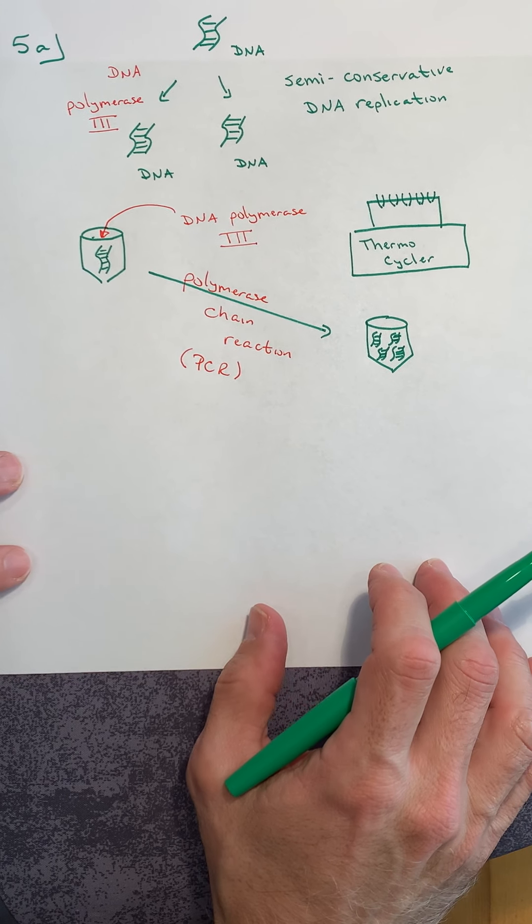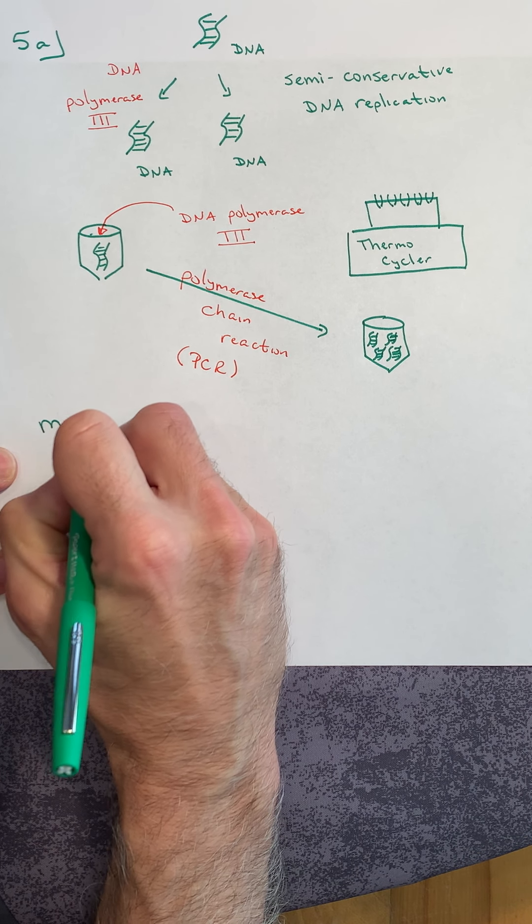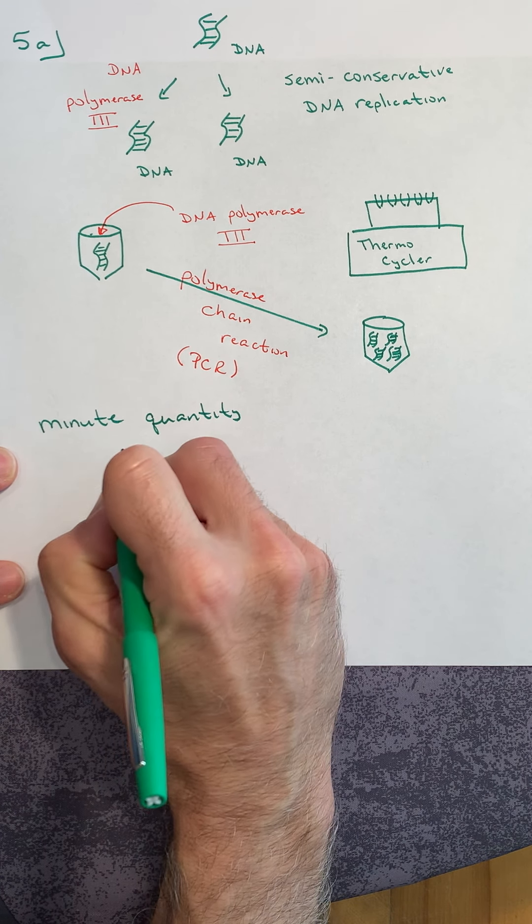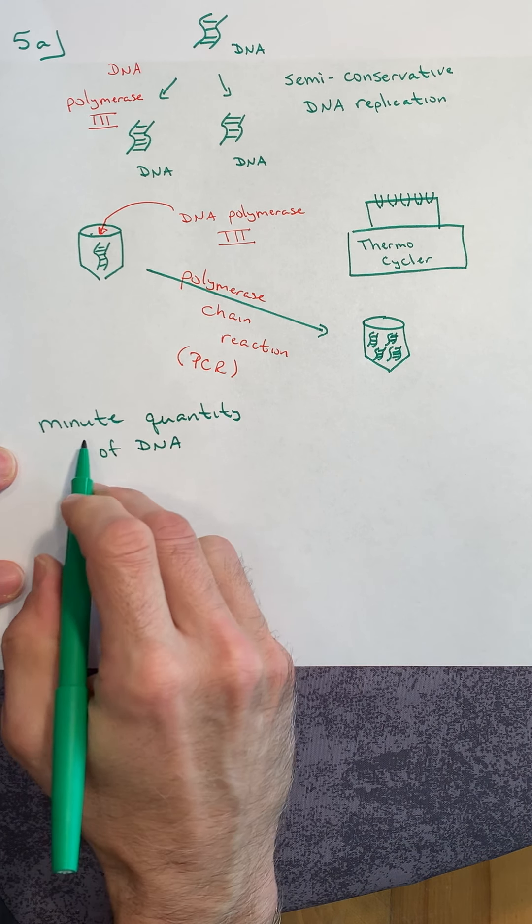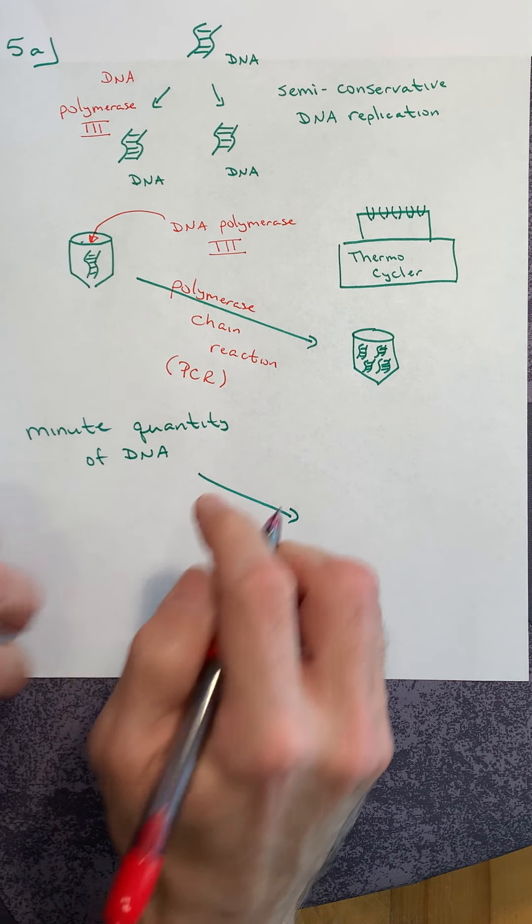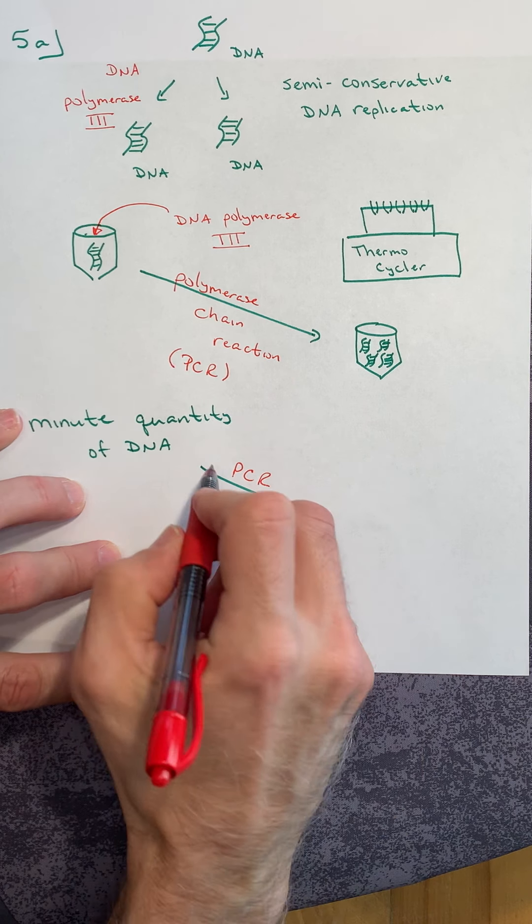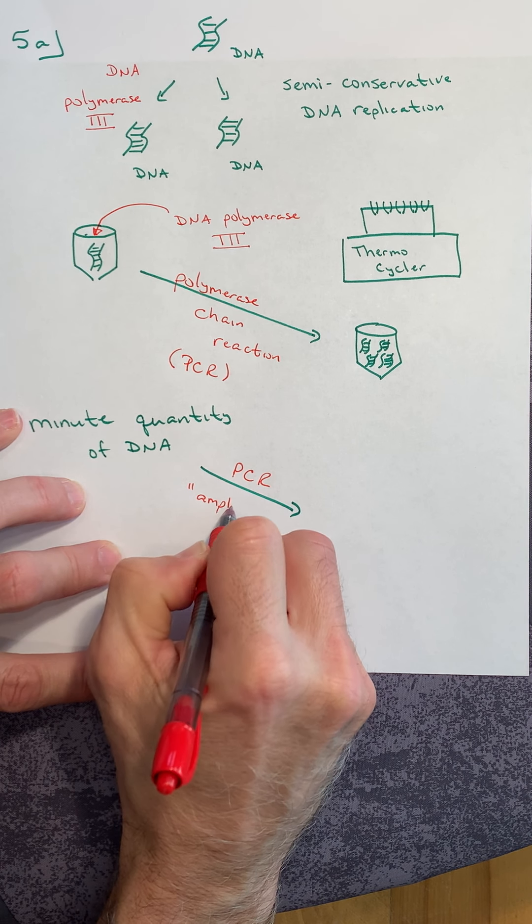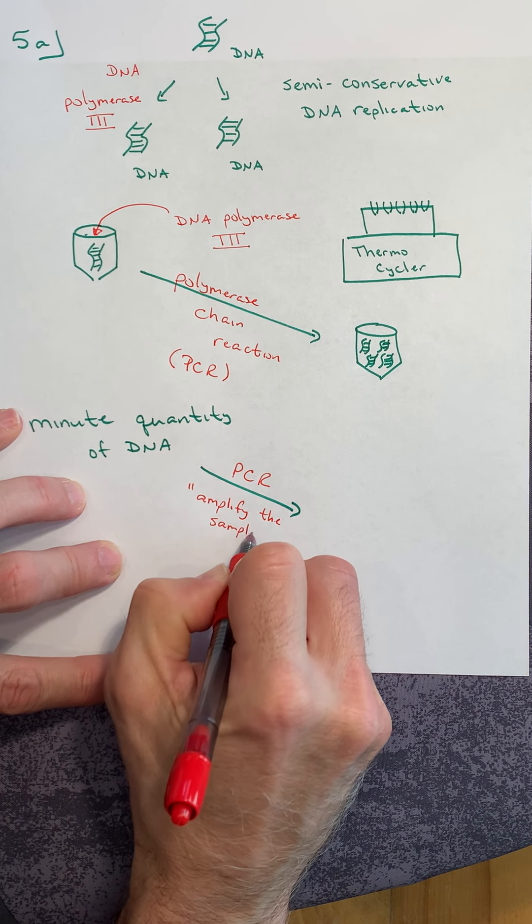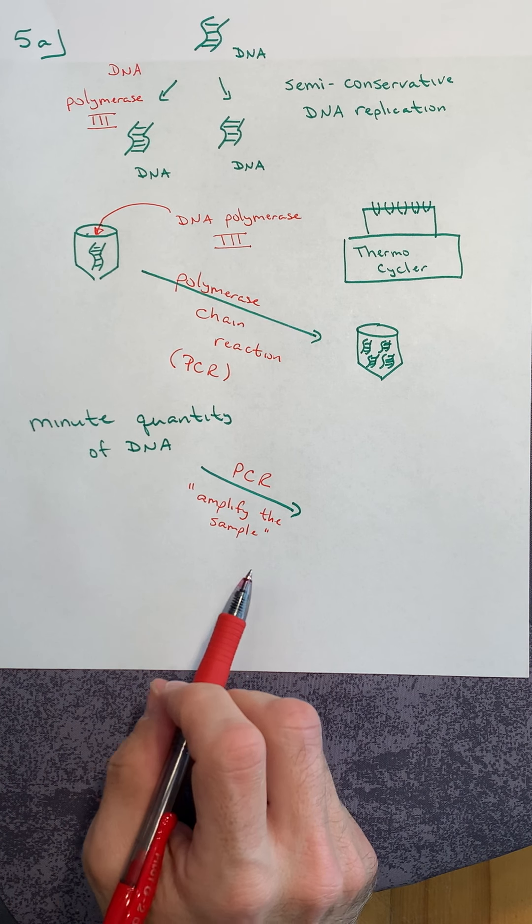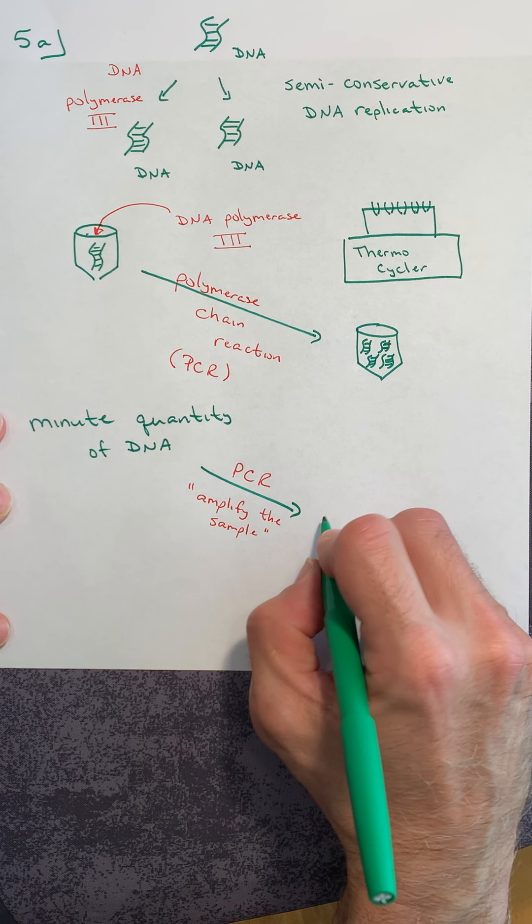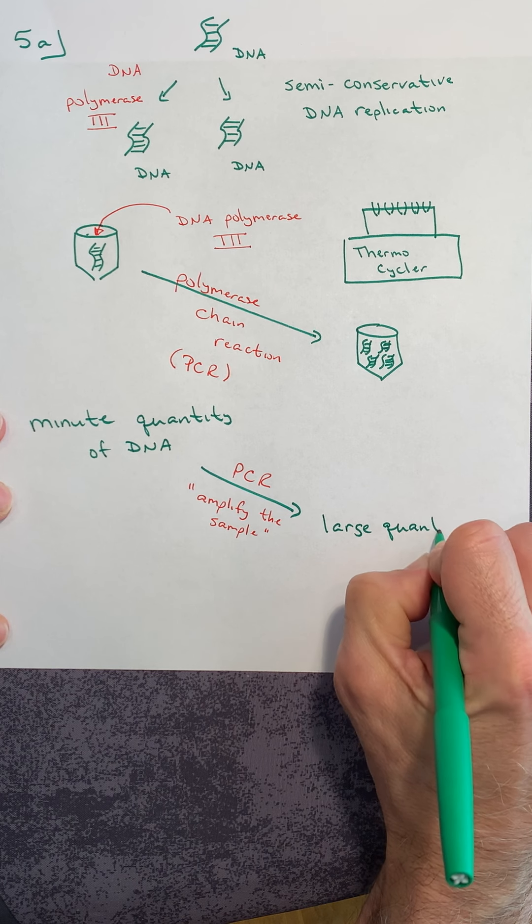So what PCR allows you to do in the lab is take a very, very small quantity of DNA. What is considered minute, not minute, minute, very little. And you then do PCR, which means that you amplify the sample. Well, just like a guitar amp makes the sound larger, when you amplify a biological molecule, you simply get more of the molecule. And so you go from a minute quantity to a very large quantity.